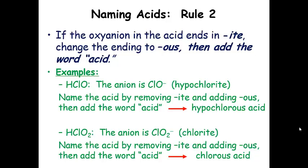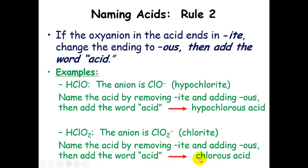What about ions that end in '-ite'? It's the same type of pattern, except if the oxyanion ends in '-ite,' instead of adding '-ic' we add '-ous.' So: remove the '-ite' ending, add '-ous,' and add the word 'acid.' Here's hypochlorite — that's our oxyanion. When we have H-plus in front of it, we remove '-ite,' add '-ous,' and add 'acid,' giving us hypochlorous acid. Similarly, here's chlorite with an H-plus. We remove '-ite,' add '-ous,' and add 'acid' to get chlorous acid.